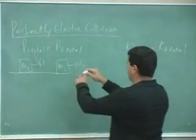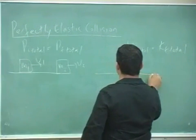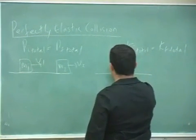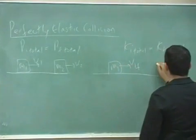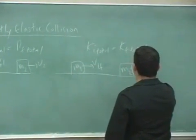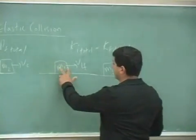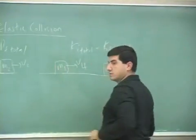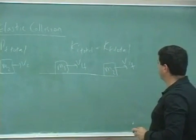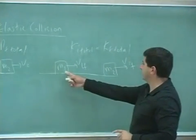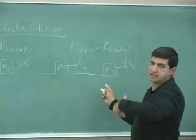And then they bounce off of each other and they're left with M1, V1 final, M2, V2 final. And it's possible that this one will even bounce backward after it hits the second object. Usually that happens when this one is less massive than that one. It's likely that it's going to bounce back.